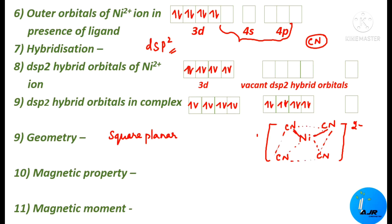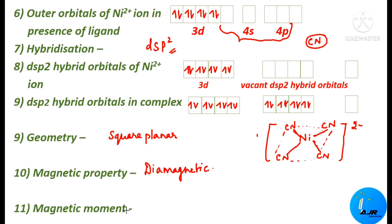After forming the complex, we check the magnetic property by looking at unpaired electrons. If unpaired electrons are present, the complex is paramagnetic; if all electrons are paired, it is diamagnetic. Here, all electrons are paired, so the complex is diamagnetic. The magnetic moment is given by μ = √(n(n+2)); since n = 0 (no unpaired electrons), μ = 0.